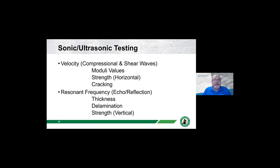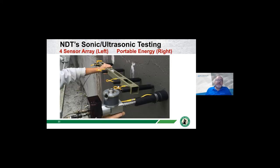Cracking affects how energy waves propagate through concrete, but we can determine the relative strength. That's from the surface velocity of surface waves. There's also a vertical component where energy waves are reflected off various boundary conditions, giving us the thickness of members. These energy waves will propagate until they impact a boundary condition such as a delamination, the bottom thickness of a deck, or the bottom tip elevation of a pile.